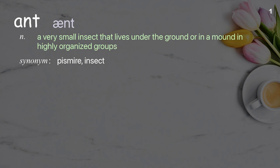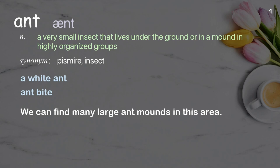Ant: a very small insect that lives under the ground or in a mound in highly organized groups. Examples: a white ant, ant bite. We can find many large ant mounds in this area.